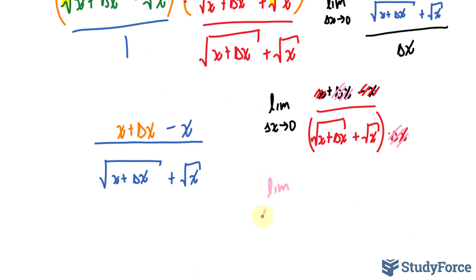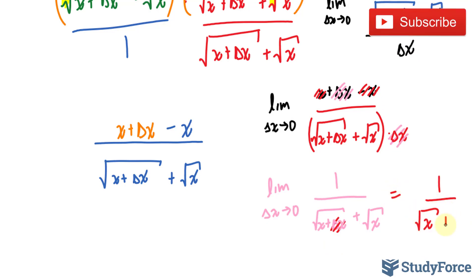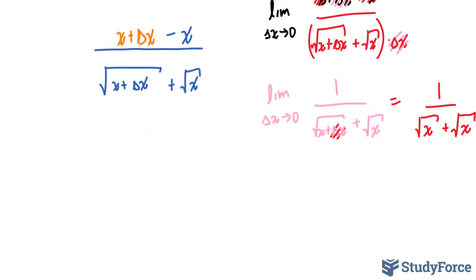Leaving us with the limit as delta x approaches 0, 1 over the square root of x plus delta x plus the square root of x. Now, if I take the limit as delta x approaches 0, this term becomes 0, and we are left with 1 over the square root of x plus the square root of x. That's like saying x plus x. We know x plus x is 2x. So in our case here, we have 1 over 2 times the square root of x.